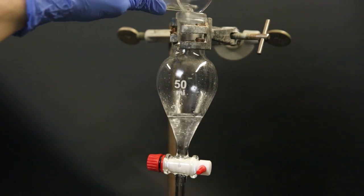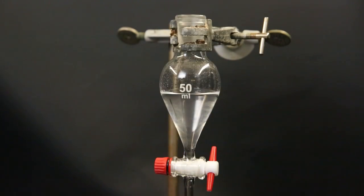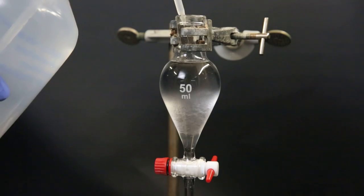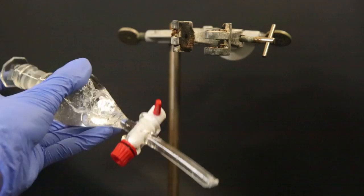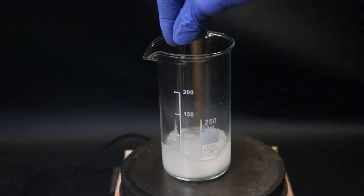I pour the water layer back in and extract it once more with some ether. I drain away the water layer and then pour the previous ether layer back into the sep funnel. Now I wash the ether layer with water and a 5% sodium carbonate solution. When that is done, I dry the ether layer with some anhydrous sodium sulfate.